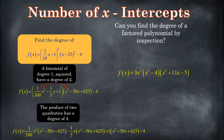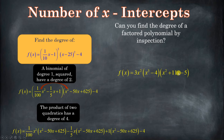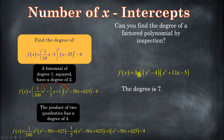Let's see another example. Say we're asked to find the degree of: three x squared times the quantity x cubed minus four, times x squared plus 11x minus five. When I multiply the inner two factors together, that's going to give me x to the fifth as the highest power. Then I distribute the three x squared — x squared times x to the fifth gives x to the seventh. So the degree is going to be seven.